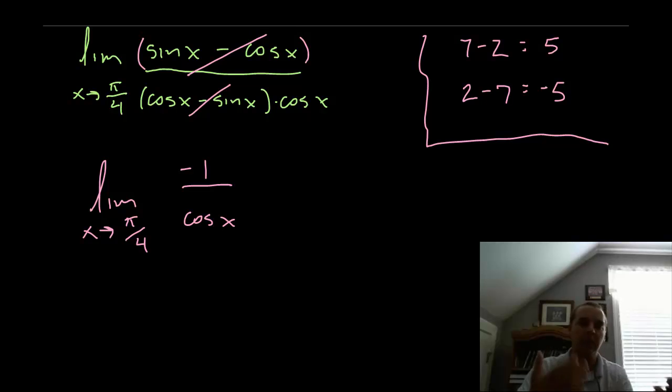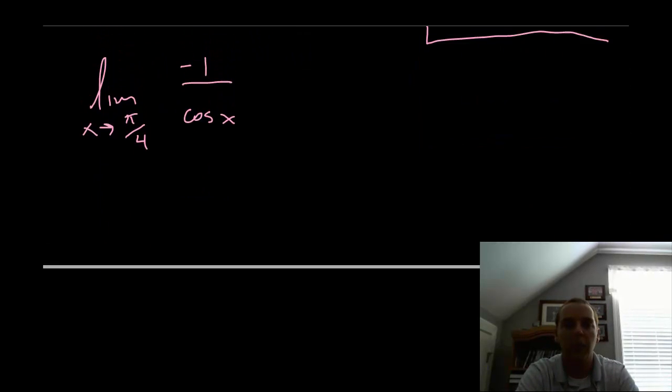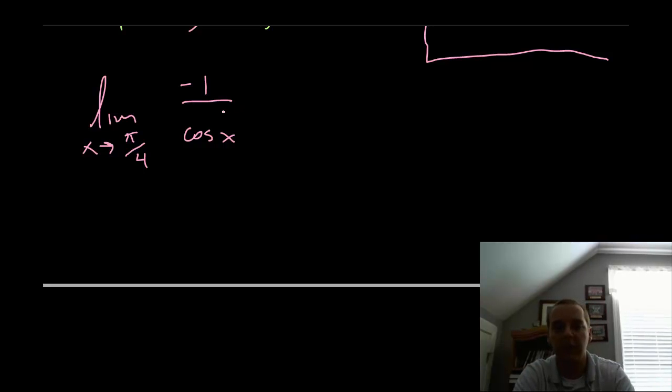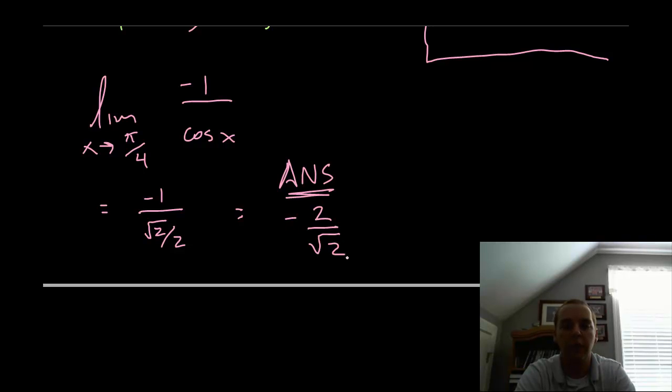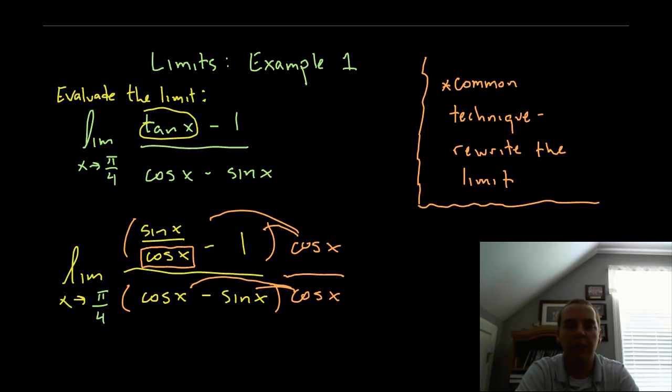But notice this happens with many of these analytic limits. Once you simplify it, once you've canceled something or gotten rid of something, then you can take the c value, plug it in again, and evaluate. So this would be negative 1 over root 2 over 2, that's the cosine of pi over 4. And so our final answer will be negative 2 over root 2 if you take the reciprocal. Or if we chose to simplify that, this would be reduced to just the negative square root of 2. So that's the answer for this original limit.